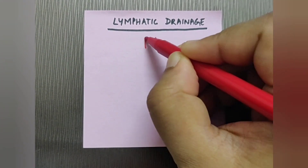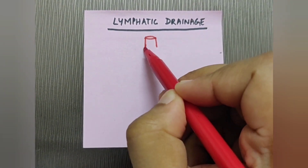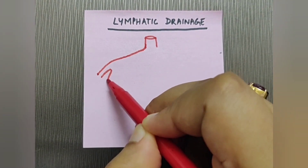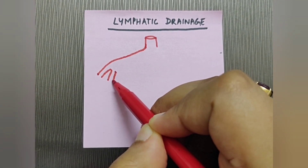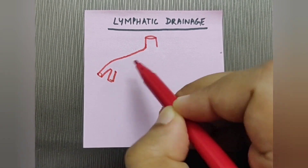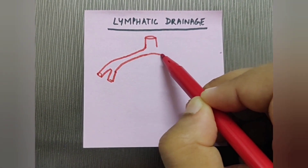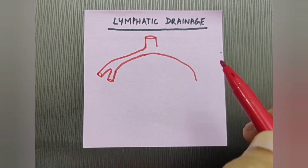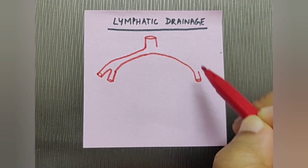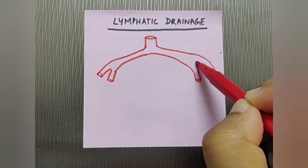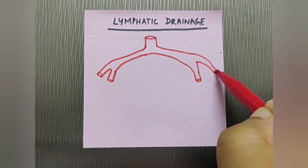First I'll be drawing the abdominal aorta, which branches into the common iliac artery, which then gives the internal iliac and the external iliac artery.